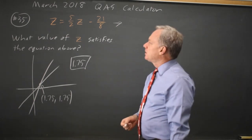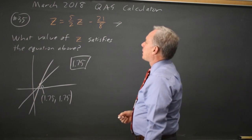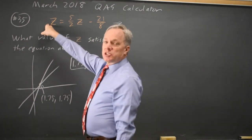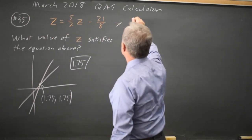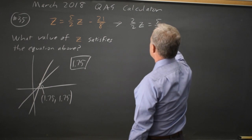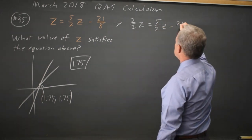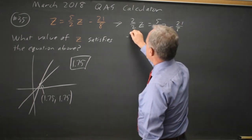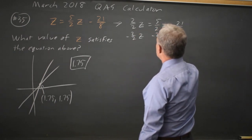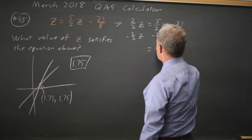I can collect like terms. 2 halves, and I'm going to call this 2 halves z equals 5 halves z minus 21 over 8.